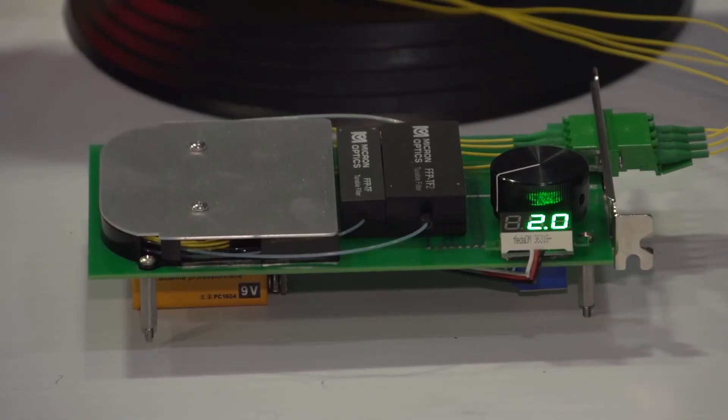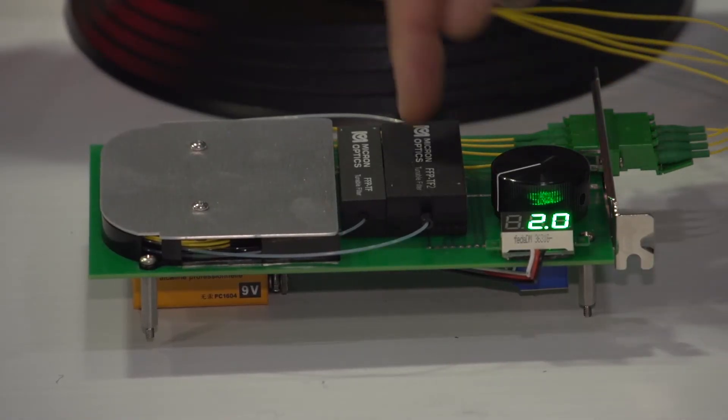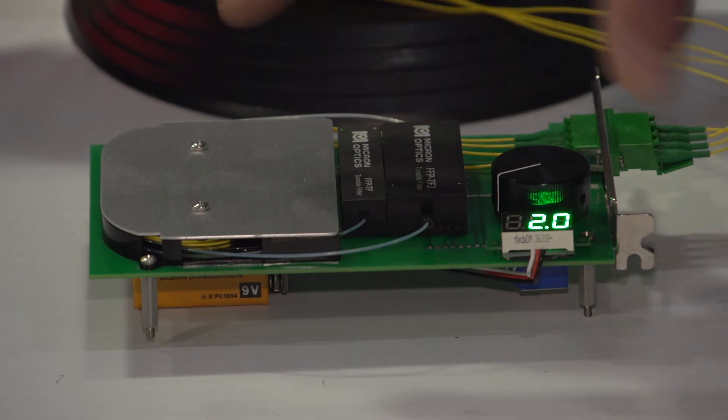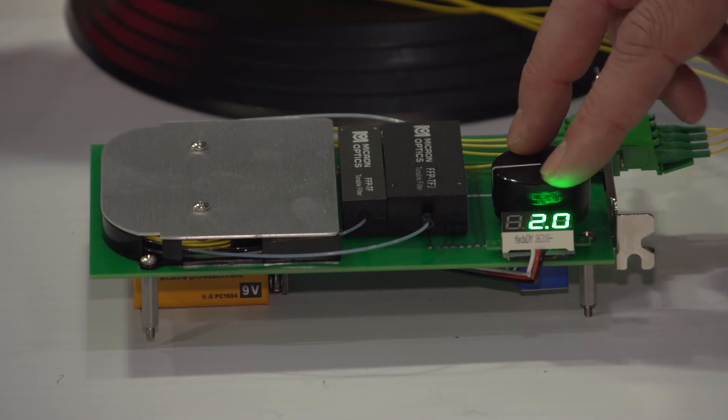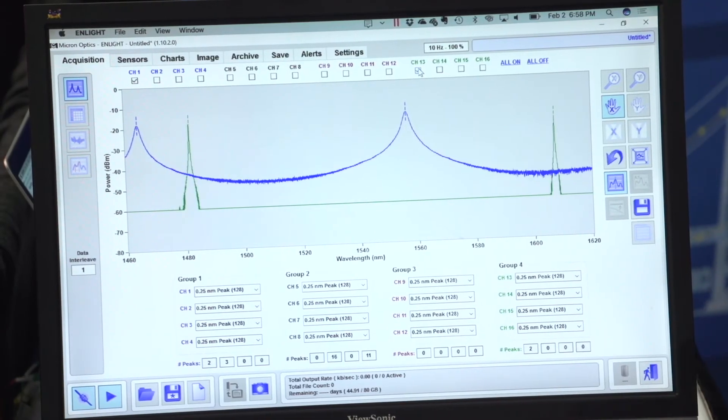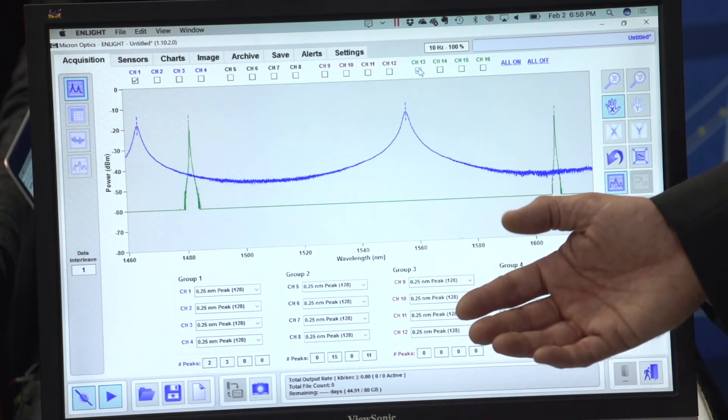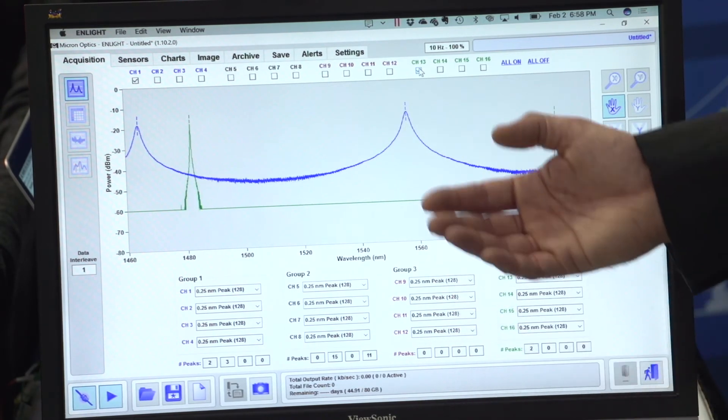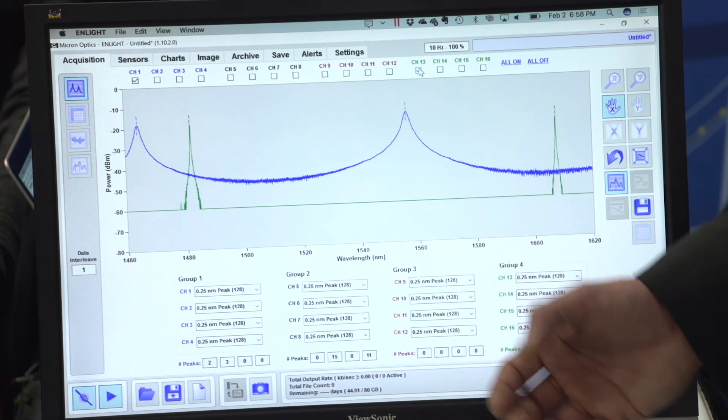I'd like to show you how the tunable filter works. Here on this board we have two different models of Fabri-Perot tunable filter installed in a typical application. They're simply voltage tuned, as represented by this potentiometer and the associated display. On the screen you see two tunable filters. In blue we have a 100 nanometer free spectral range, a lower finesse tunable filter of finesse 100.